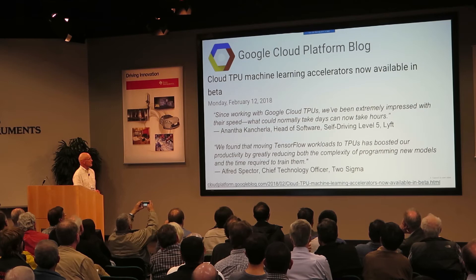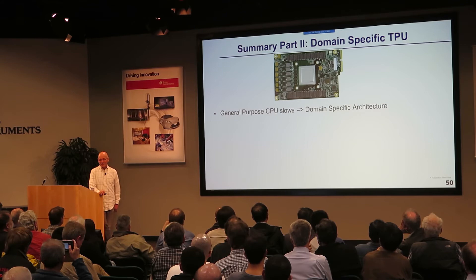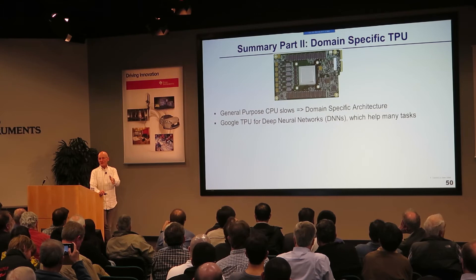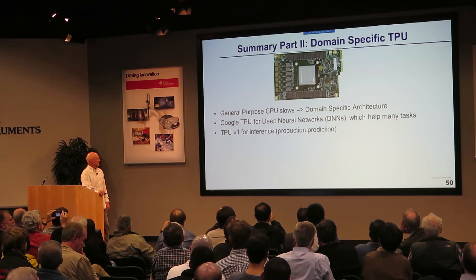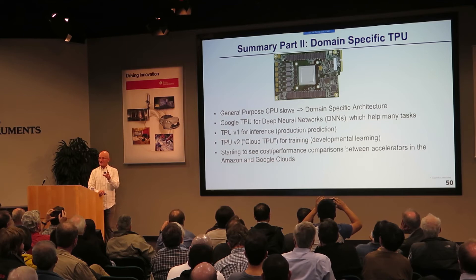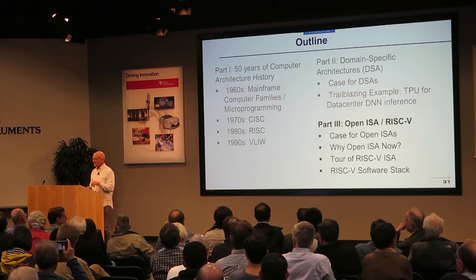Wrapping up: domain-specific architectures are a thing. General-purpose CPUs are not getting much faster. Deep neural networks are a popular area because they do lots of tasks — translation, search, ads, games, all kinds of things. The first TPU was for inference; the second is for both training and inference. You can start seeing comparisons using cloud platforms of GPUs, CPUs, and TPUs because anyone can use these things. Domain-specific architectures are the next thing — not trying to do everything, but doing specific tasks really well.